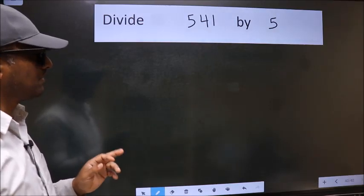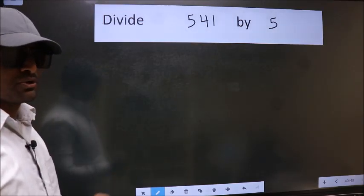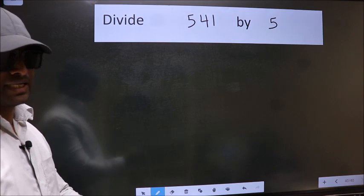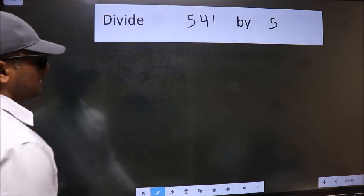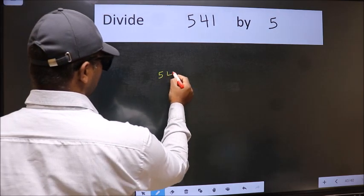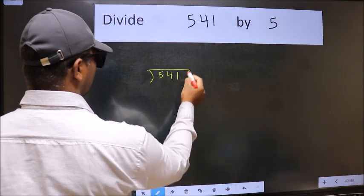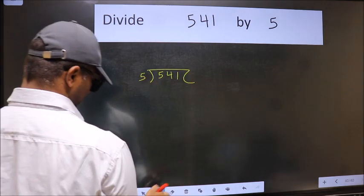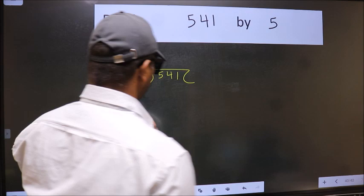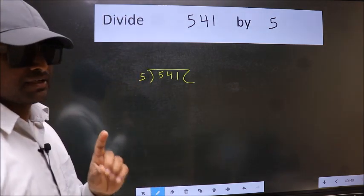Divide 541 by 5. To do this division, we should frame it in this way: 541 here and 5 here. This is your step 1.